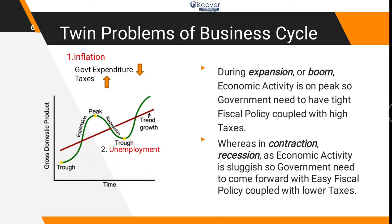When we have unemployment, the government will have to increase its expenditures because economic activity is slow. To support economic activity and investments, the government will have to bring in injections into the economy. Because of those injections, economic activity will have a boost. When you are in a trough and economic activity is very slow, you increase the aggregate expenditure of the government, and when you increase expenditure it will have a multiplier effect in the economy.